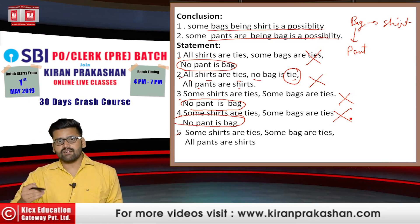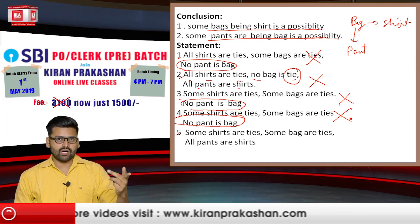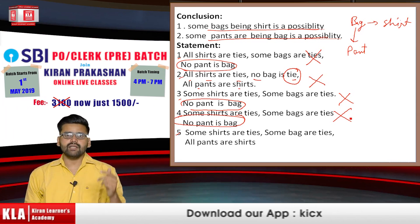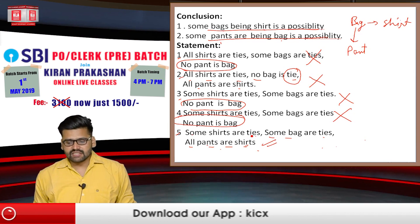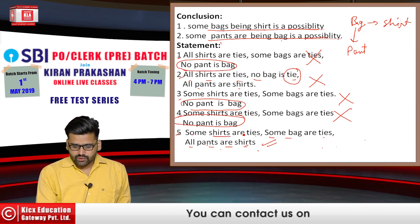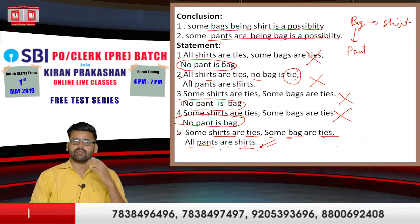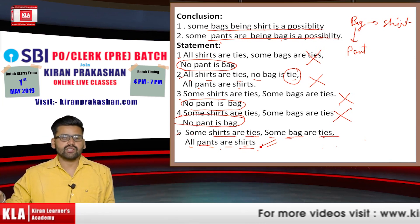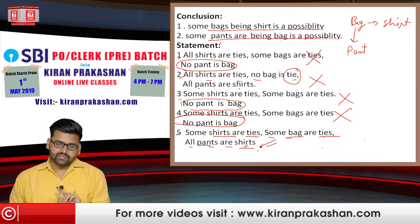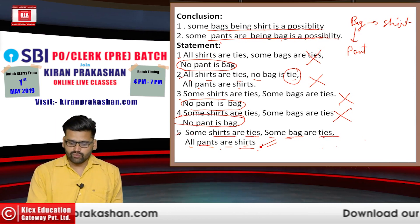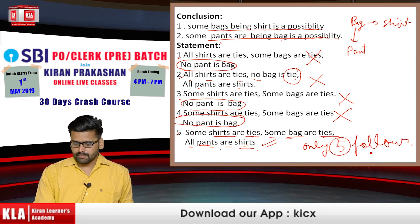In reverse syllogism: a positive conclusion means a positive statement, and a negative conclusion means a negative statement. So: positive statement → positive conclusion; negative statement → negative conclusion. Without even drawing a diagram, the right answer becomes clear: only the fifth follows.